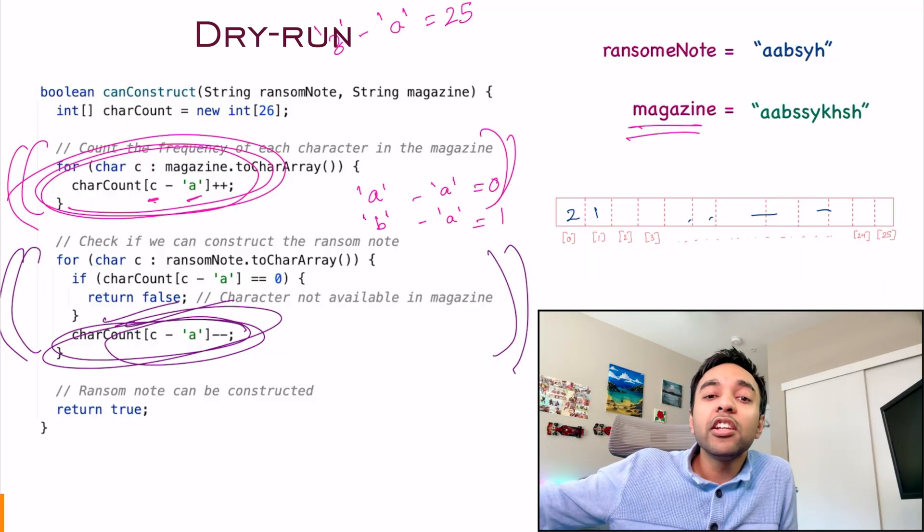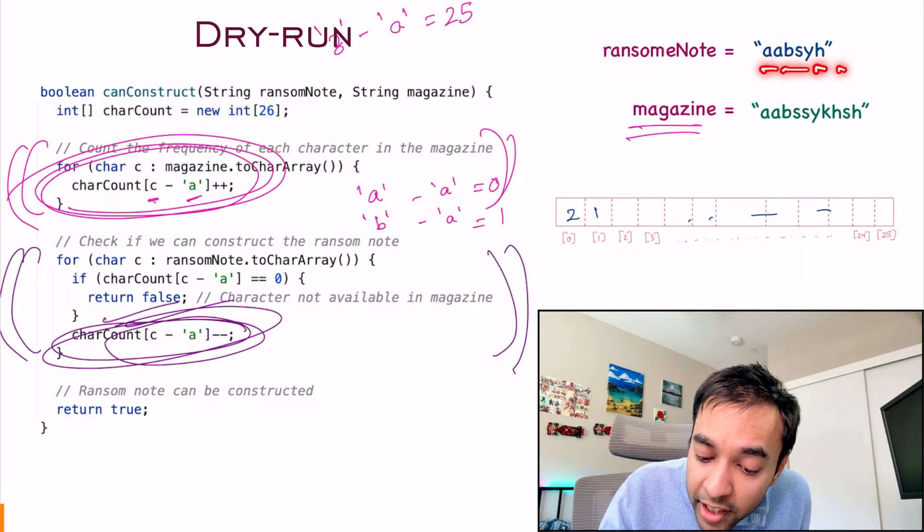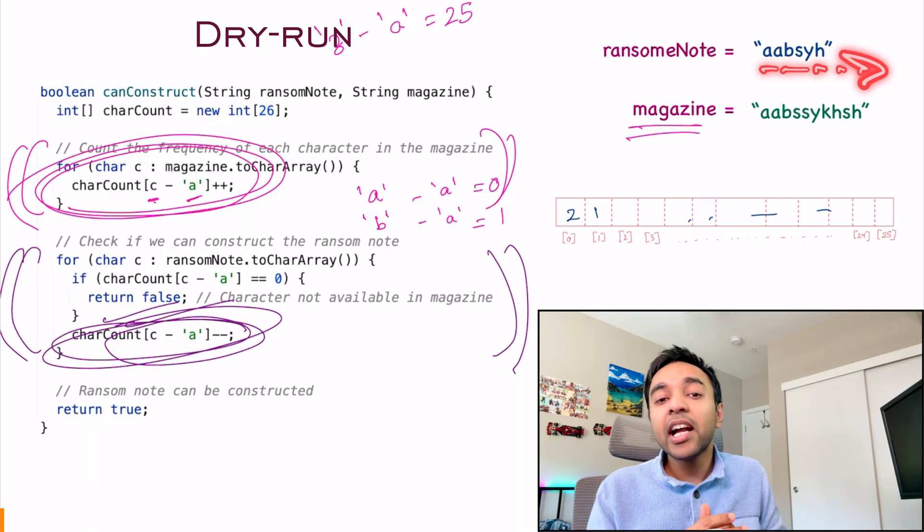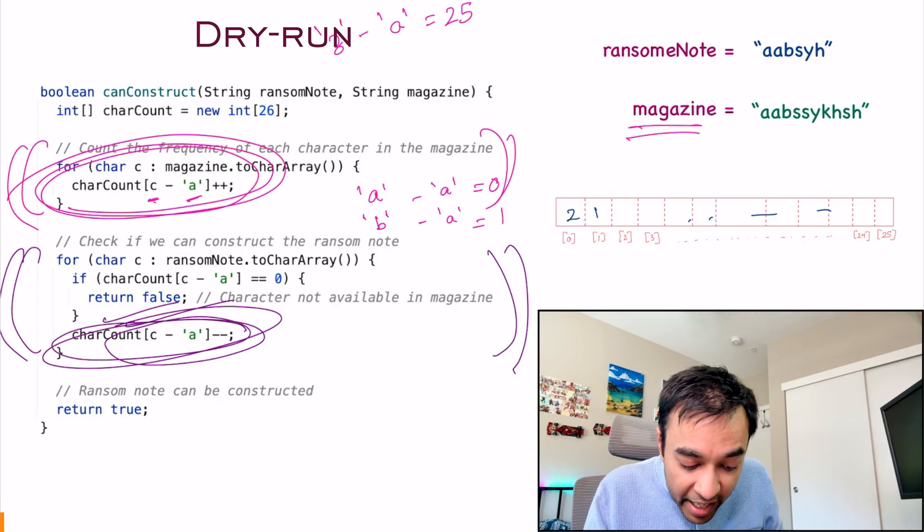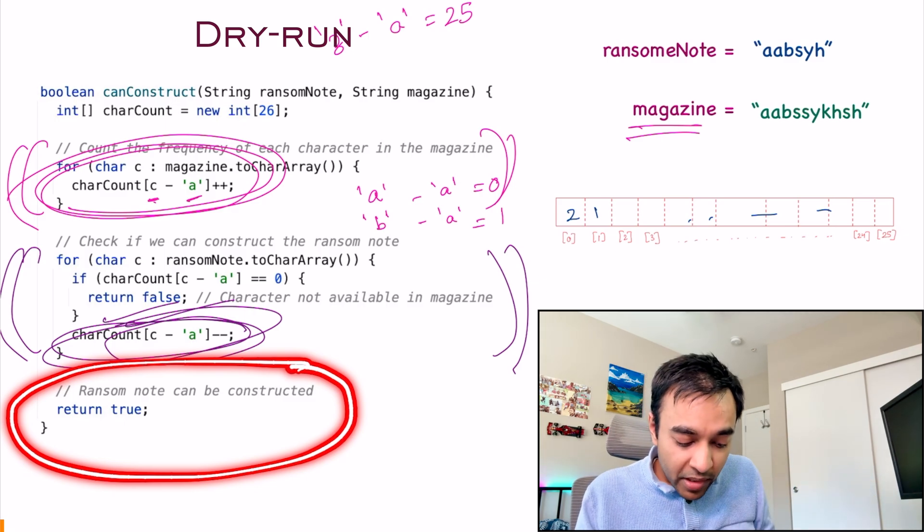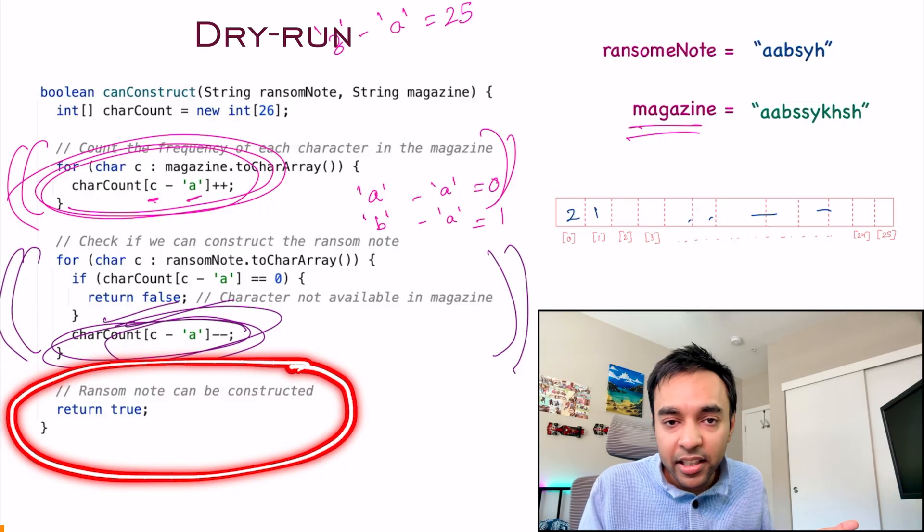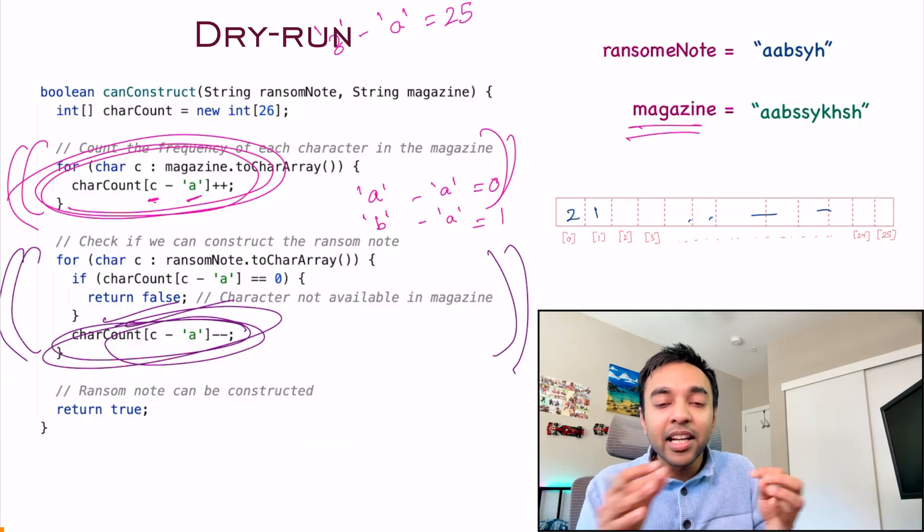However, if you were able to iterate through the entire string and did not exhaust, then you can end your loop. And what happens at the very end? You can return a true because you're not worried about any of the extra characters that are remaining. You can simply say that yes, I was able to construct my string. I hope the solution is now pretty much clear to you.